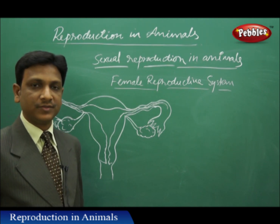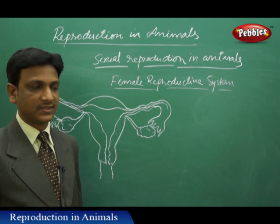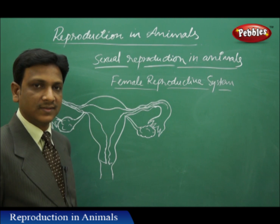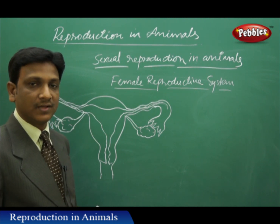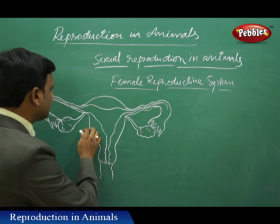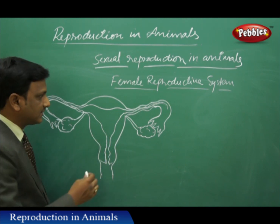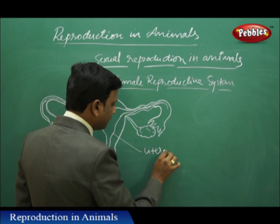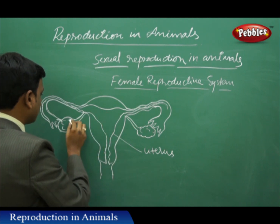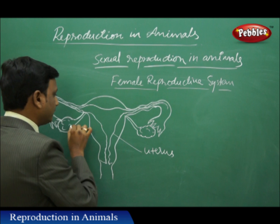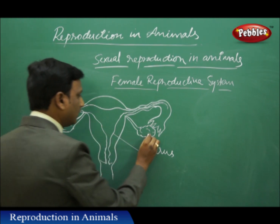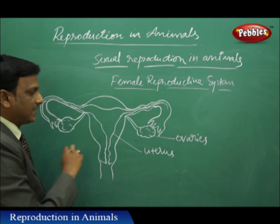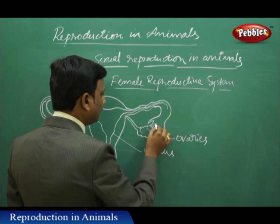Now let us see the female reproductive system. This is the human female reproductive system present in the bodies of females. Its location is in the lower abdomen, below the navel. This part of the female reproductive system is called the uterus. The female reproductive system has two important organs which produce female reproductive cells - like testes in males, here we have a pair of ovaries.